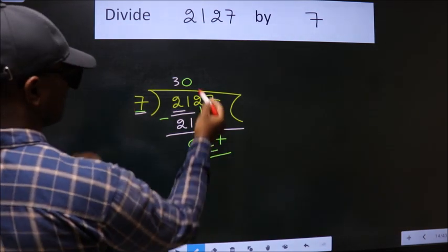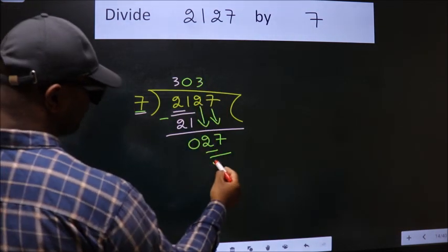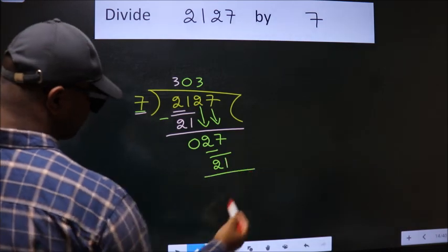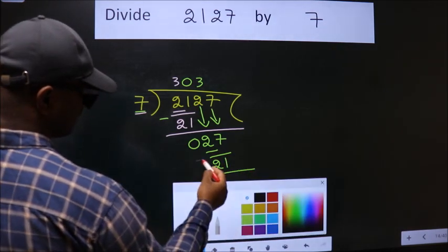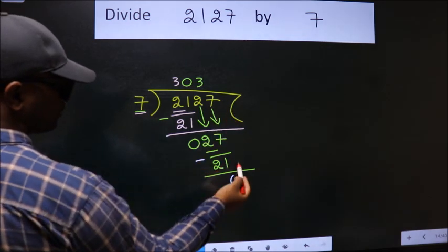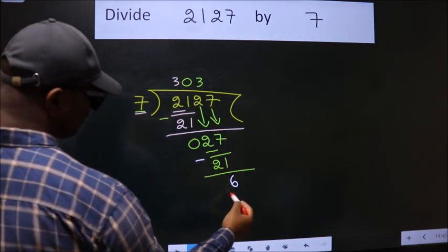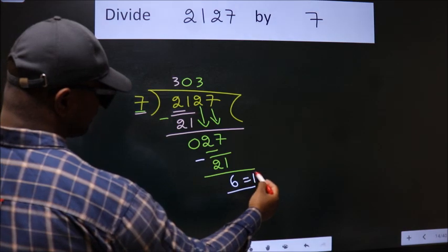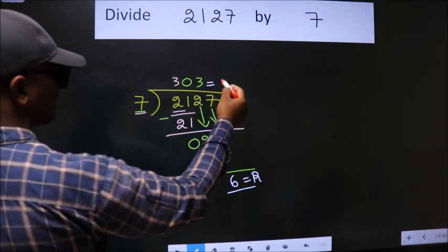Now we subtract and get 6. No more numbers to bring down, so we stop here. This is our remainder, this is our quotient.